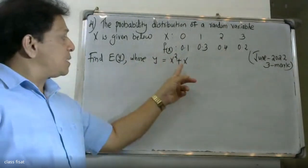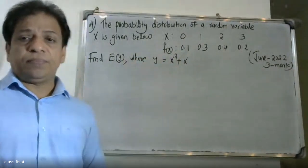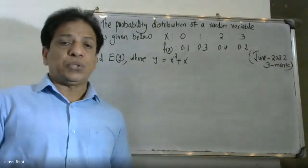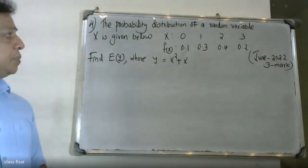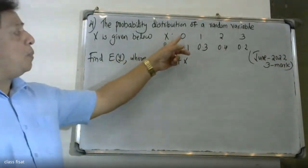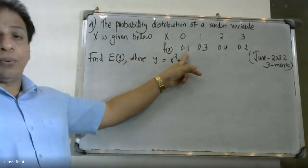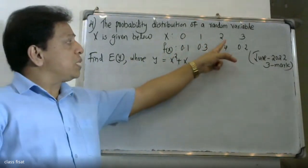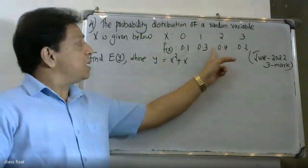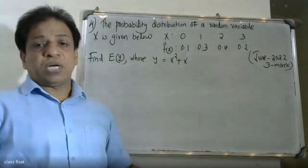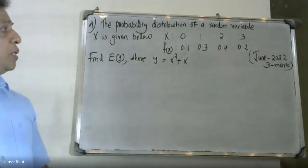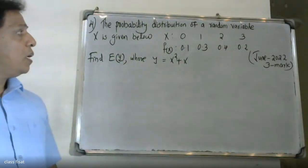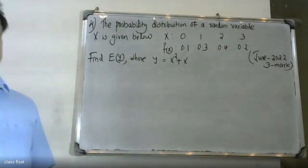Y equals X squared plus X, and we need to find the expectation of Y. Now, f(0) = 0.1, f(1) = 0.3, f(2) = 0.3, f(3) = 0.3. The total probability equals 1, and each f(x) is greater than or equal to 0 — our probability mass function properties are satisfied.